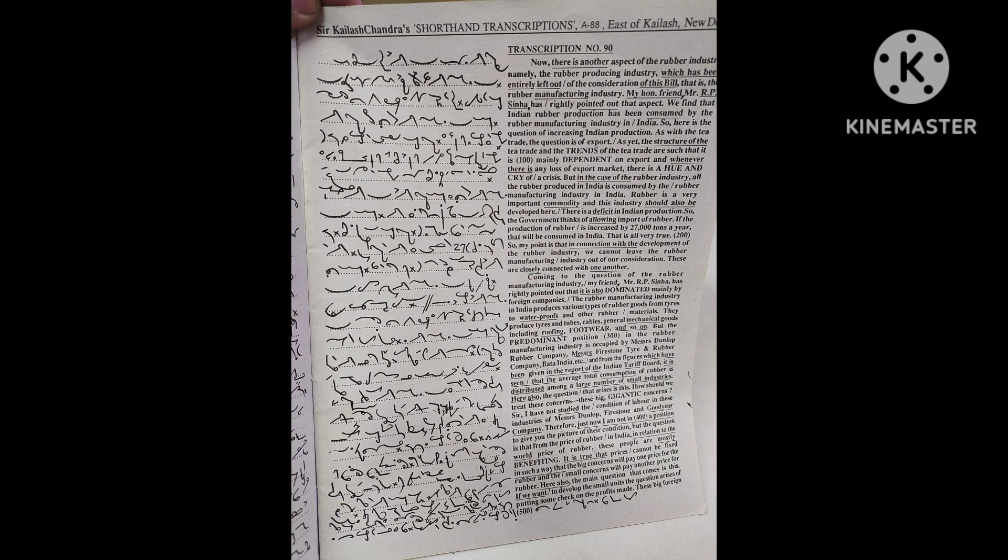But in the case of the rubber industry, all the rubber produced in India is consumed by the rubber manufacturing industry in India. Rubber is a very important commodity and this industry should also be developed here. There is a deficit in Indian production so the government thinks of allowing import of rubber. If production of rubber is increased by 27,000 tons a year that will be consumed in India. That is all very true.